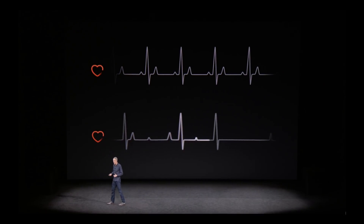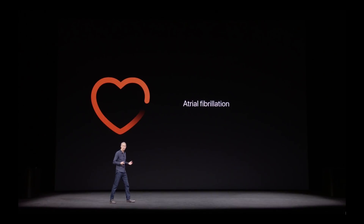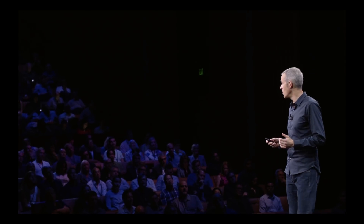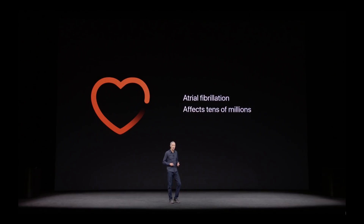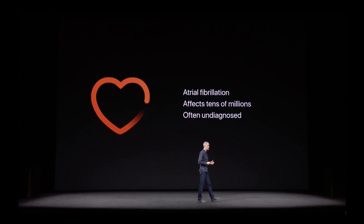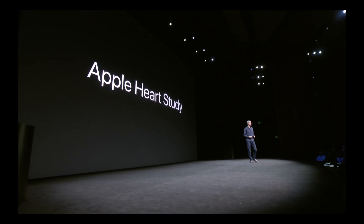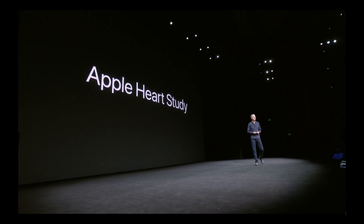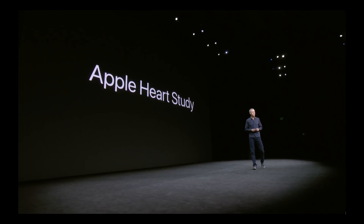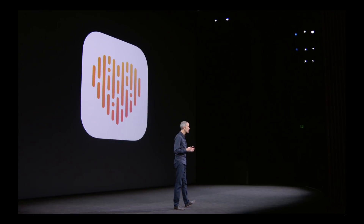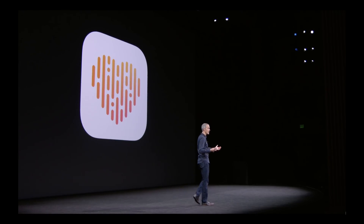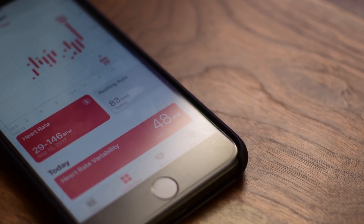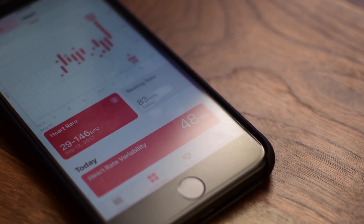Apple will also be working with the FDA and Stanford on a new study — the Apple Heart Study — to help detect things like atrial fibrillation. These are often undiagnosed and can affect millions of people; basically just irregular heartbeats that you may not notice. But if you have an Apple Watch on your wrist — the most popular heart rate monitor in the world — they're working with Stanford and the FDA to run a study that will be available in the App Store later this year to help monitor and hopefully detect these conditions in more people.